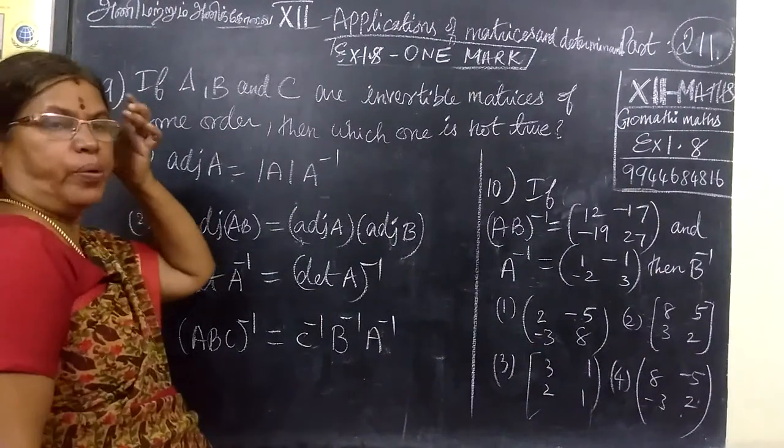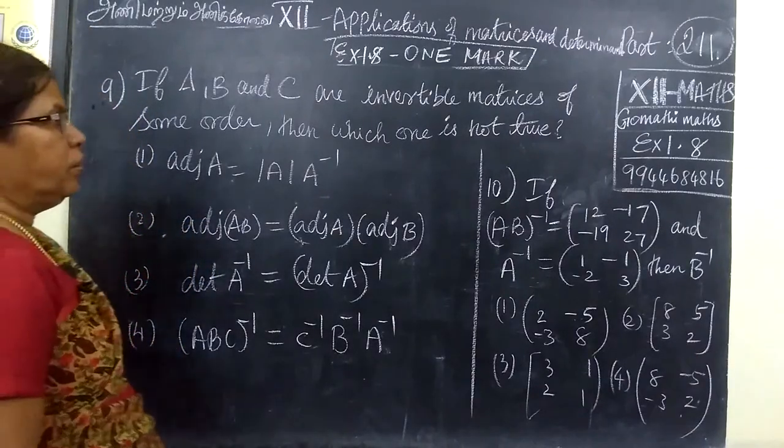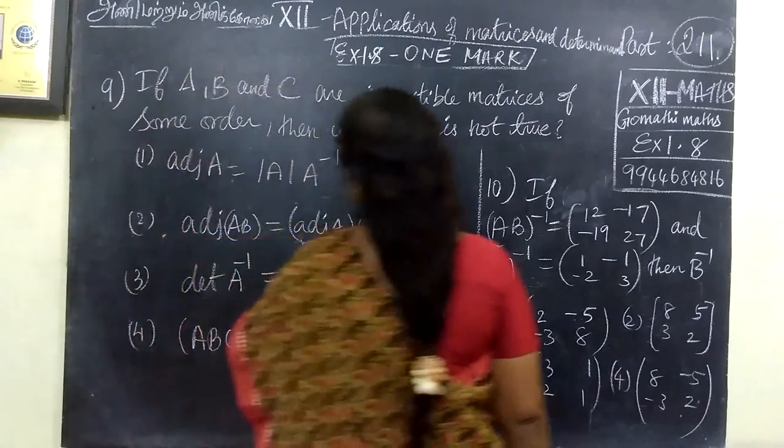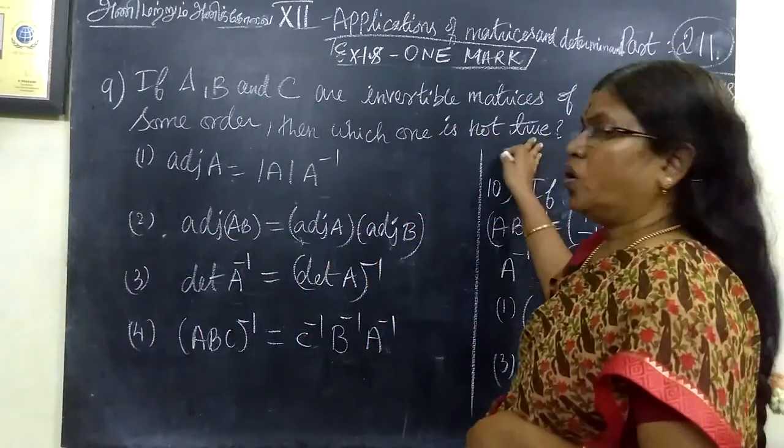So now we exercise 1.8 Question No. 9. If A, B, C are invertible matrices of some order, then which one of these is not true? This is the correct option.